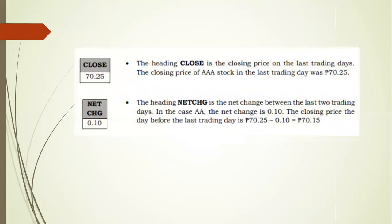The heading 'Close' is the closing price on the last trading day. The closing price of AAA stock on the last trading day was 70 pesos and 25 centavos. The heading 'Net Change' is the net change between the last two trading days. For AAA, the net change is 0.10, so the closing price the day before was 70 pesos and 25 centavos minus 0.10, which equals 70 pesos and 15 centavos.